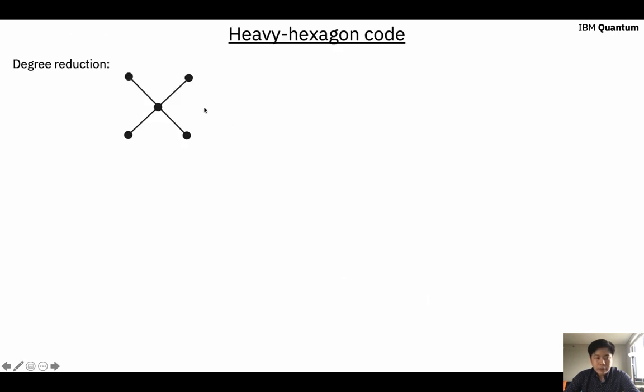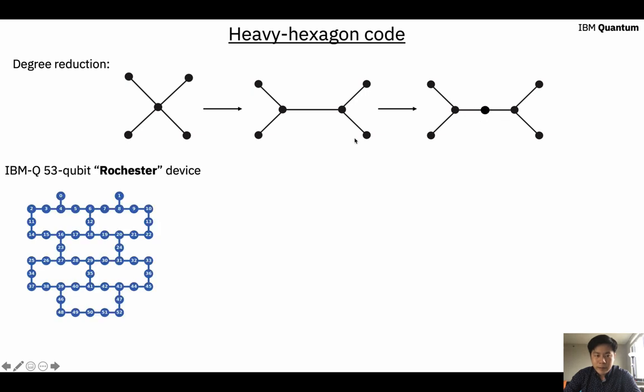Just to briefly introduce the idea: here we have qubits put on the vertices of a graph, and this middle qubit has a degree 4 connection. To reduce the degree, we can split the single vertex into 2, so they will both become degree 3. We can further put another vertex in the middle, which will have only degree 2 connection.